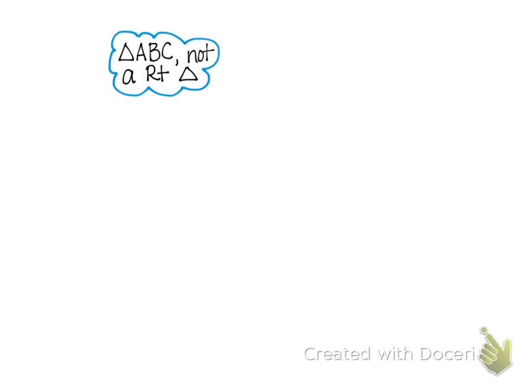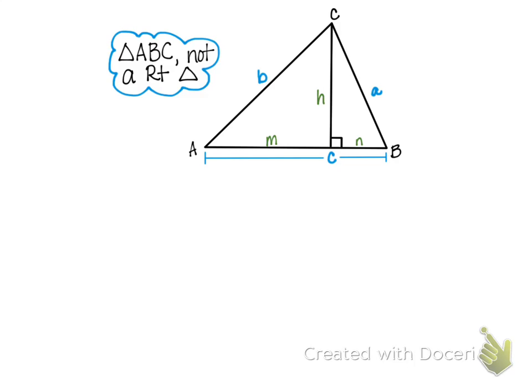Here's the recap. We started with a triangle ABC that's not a right triangle. I want to now take out that altitude so we're just looking at the non-right triangle. I want to make sure you're paying attention to the orientation of the labeling of the sides and the angles, in that angle A and side a are opposite each other, angle B and side b are opposite each other, and angle C and side c are opposite each other.